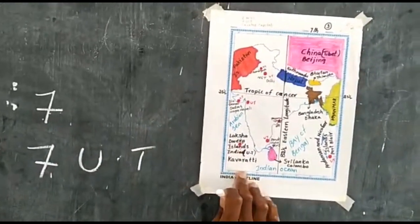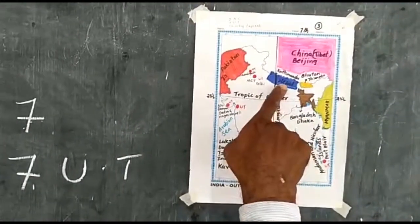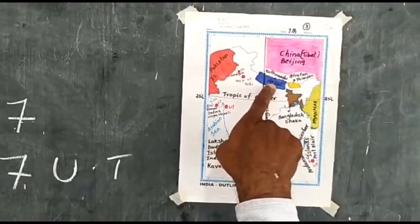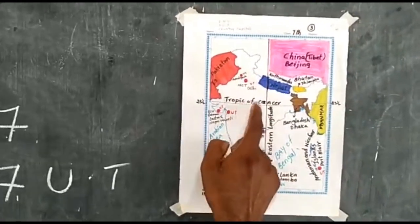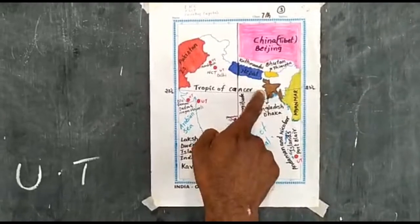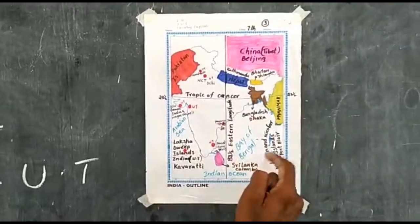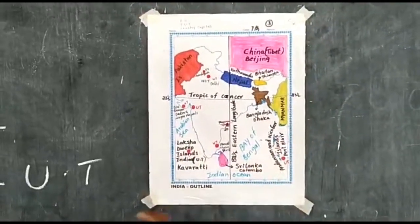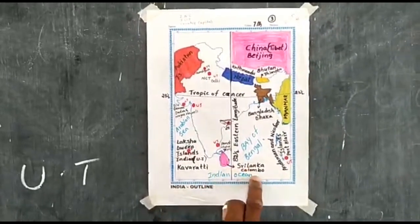Bhutan — capital Thimphu. Bangladesh — capital Dhaka. Myanmar — also a neighboring country. Sri Lanka — capital Colombo. These 7 countries we are calling our neighboring countries.